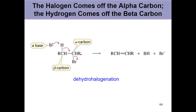We'll talk about which beta carbon actually loses the hydrogen in just a second. Note what this type of reaction is called overall: it's a dehydrohalogenation — you're losing hydrogen and halogen, right there in the name. Removal of a halogen and a proton at the same time. Also known as a beta elimination or a 1-2 elimination, in case you see those notations anywhere.